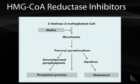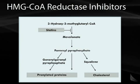Mevalonate is not only used to form cholesterol, but it's also used to form farnesyl and geranylgeranyl groups, which are used as linkers for proteins to the cell membrane. Scientists have postulated that statins have anti-inflammatory properties because they're able to prevent this step as well.